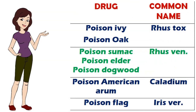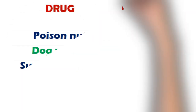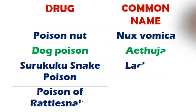Poison ivy and poison oak are the common names of Rhus tox. Poison sumac, poison elder, and poison dogwood are the common names of Rhus venenata. Poison American arum is the common name of Caladium. Poison flag is Iris versicolor.